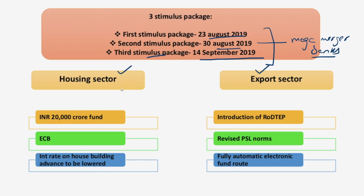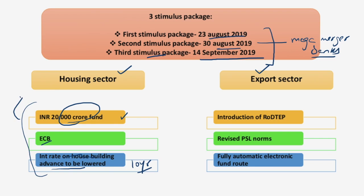For the housing sector, the key measures include: a 20,000 crore fund window — with 10,000 crore from the government and the rest from outside investors — to provide last-mile funding for affordable and middle-income housing, potentially unfreezing construction in about 70% of eligible dwelling units. ECB guidelines will be relaxed to facilitate financing for home buyers eligible under Pradhan Mantri Avas Yojana. Interest rates on house building advances will be lowered and linked to 10-year G-Sec yields.